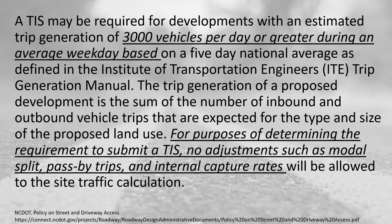This is from a state — 3,000 vehicles per day or more based on an average weekday. For the purposes of determining the requirement to submit a TIA or TIS, no adjustments such as modal split, pass-by trips, or internal capture rates are allowed. So it's common to see this — a raw trip generation estimate based on that particular land use before any adjustments are made.